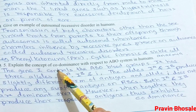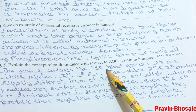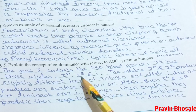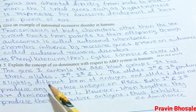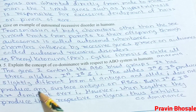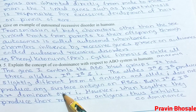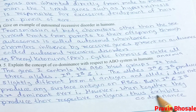Explain the concept of codominance with respect to the ABO system in humans. Gene I controls ABO blood group and produces three alleles: I-A, I-B, and small i. Alleles I-A and I-B produce slightly different forms of antigen; small i does not produce any surface antigen on RBCs. Both I-A and I-B are dominant over small i. However, when I-A and I-B are together, they produce their respective antigens and thus exhibit codominance. This was all about pedigree charts.